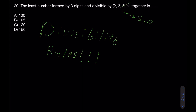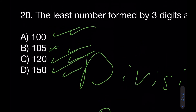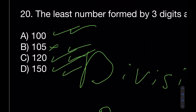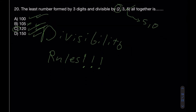Checking divisibility by 3: choices 100, 105, 120, and 150 — the first three and 150 are all divisible by 3. The difference comes down to divisibility by 2. 100 is divisible by 2; 105 is not; 120 is; 150 is. Between 100, 120, and 150, the least number is 120. The answer is C.